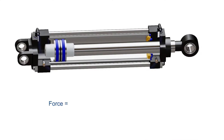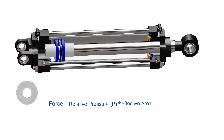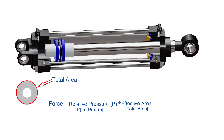The theoretical force of the actuator is the relative pressure on the piston multiplied by the effective area of the piston on which pressure is exerted. Here, the relative pressure is the pressure of the supplied air minus the atmospheric pressure. During the extension stroke, compressed air can exert pressure on the total cross-sectional area of the piston, giving us the expression: theoretical force equals relative pressure multiplied by total area of piston.